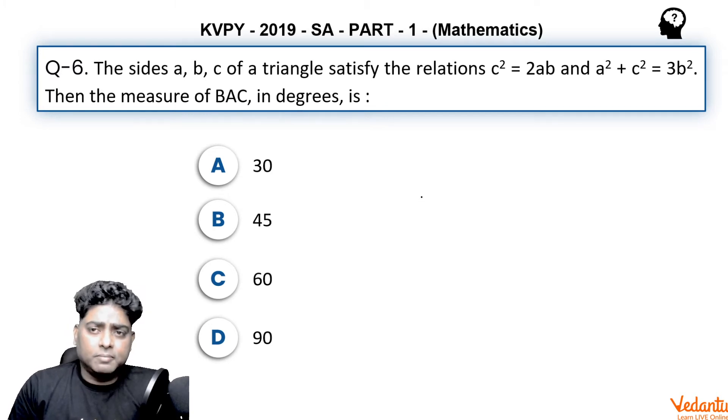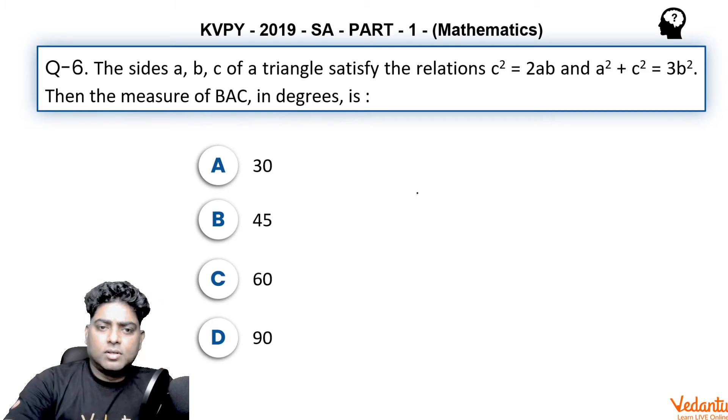So we have to find angle A and two relations are given. Let's have a look how we can solve this problem easily. Options given are 30 degrees, 45 degrees, 60 degrees, 90 degrees.